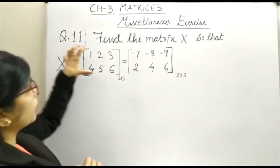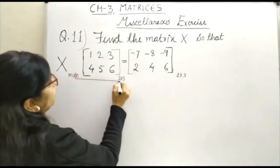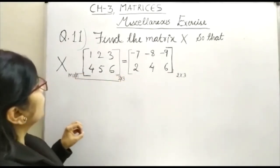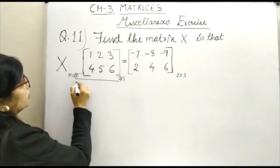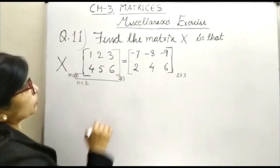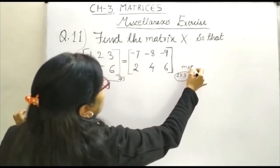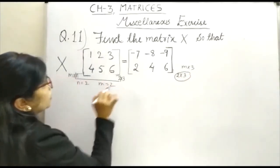Just see, if X is multiplied by this matrix, that means this column should be equal, that means column of X should be equal to the row of the given matrix. It means that N is equal to 2. Now, if N is equal to 2, then the order of the resultant matrix is M into 3 and from here you can conclude that M is equal to 2.